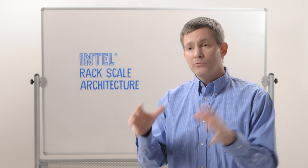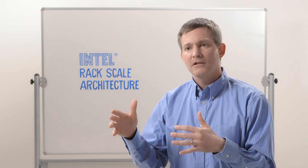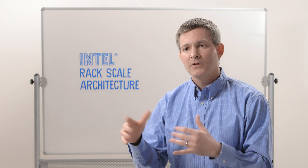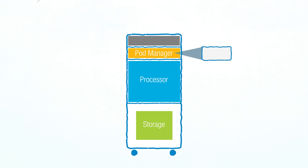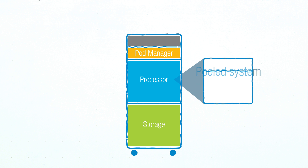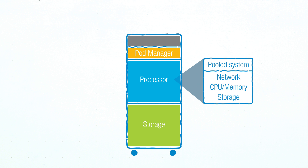There are really four pillars of Intel's Rackscale Architecture framework. The pod manager is the software and firmware that exposes the hardware underneath to the orchestration layers above to manage and enforce policies. The pooled system enables composing of the compute, storage, and networking resources to meet the workload-specific requirements.